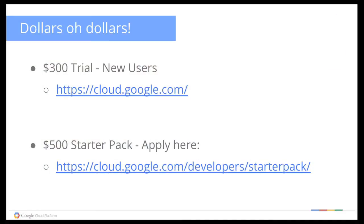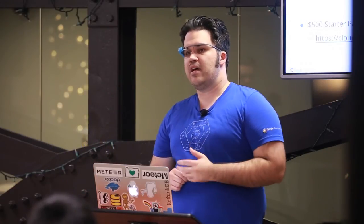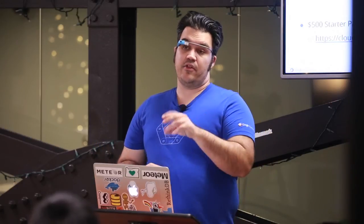You can trial all these commands yourself. There's a $300 trial for new users at cloud.google.com. You can also apply for the $500 starter pack if you have a startup. There are also other startup-related credits you can get on the Google Cloud side. I highly recommend you give it a try — it makes deploying things like RethinkDB and other Docker container images really fast.